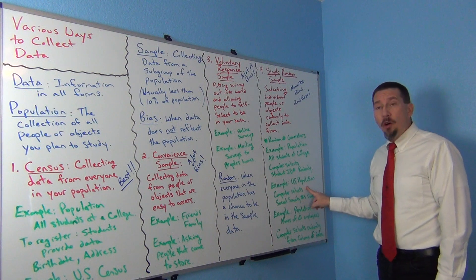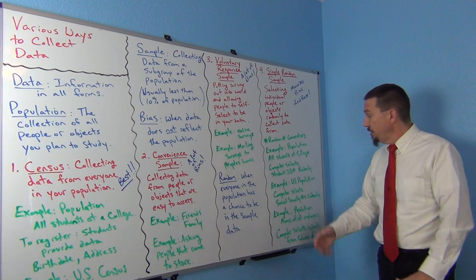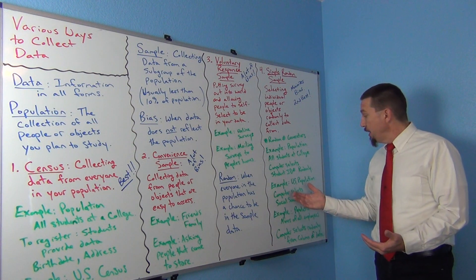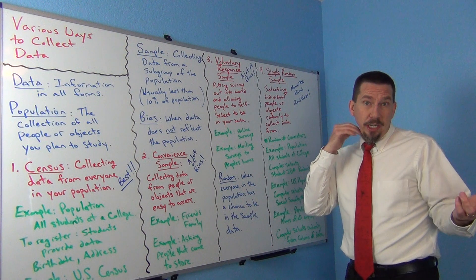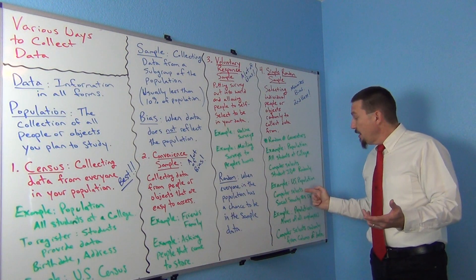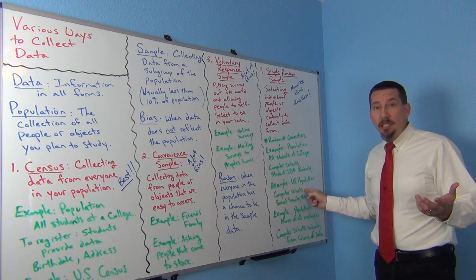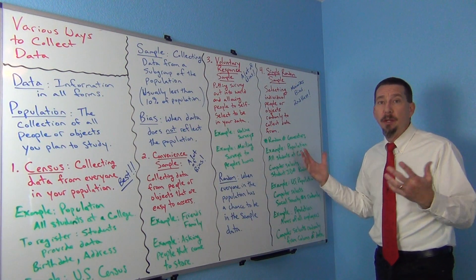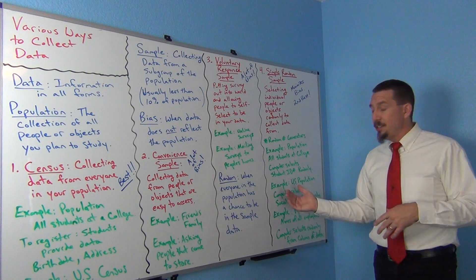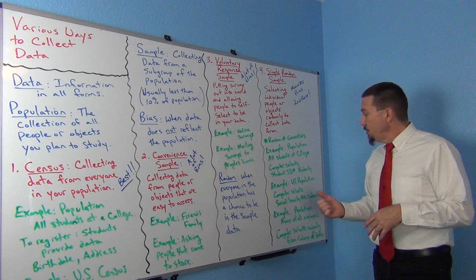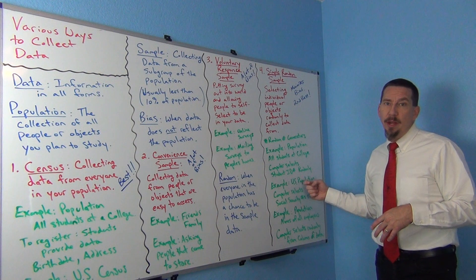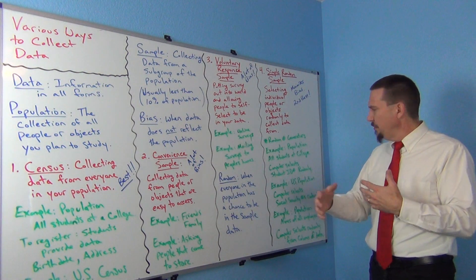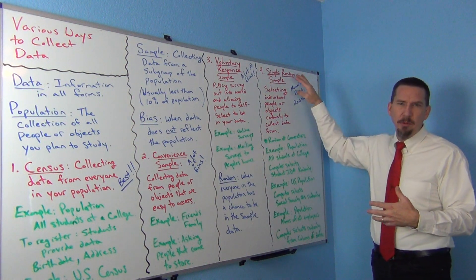Suppose we're looking at the whole US population. In the US, we all have social security numbers, so you could have a computer randomly select social security numbers, and then the government could track down those people to get information. That way everybody has a chance. Having a computer randomly select numbers is a very common technique for simple random samples.